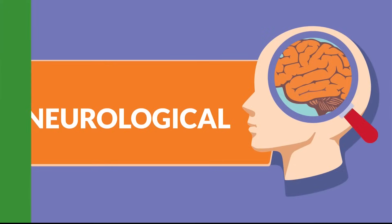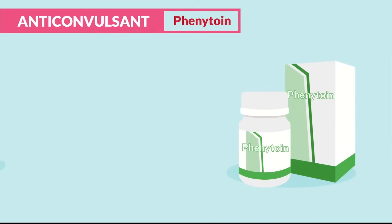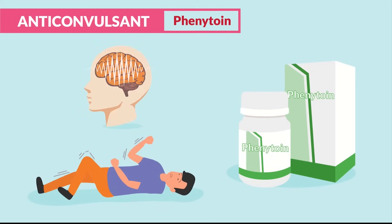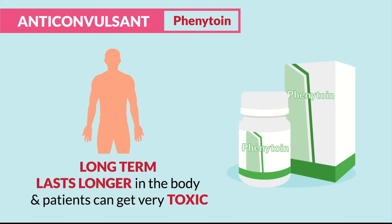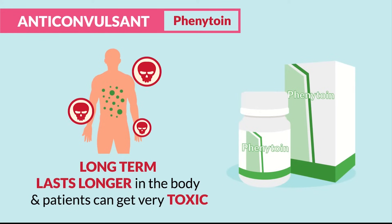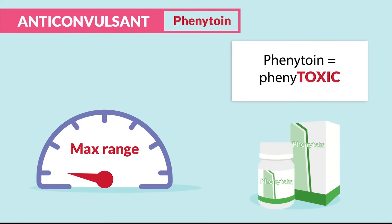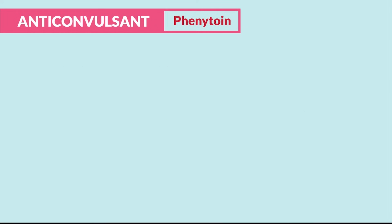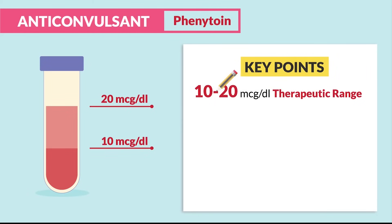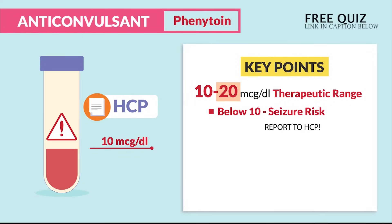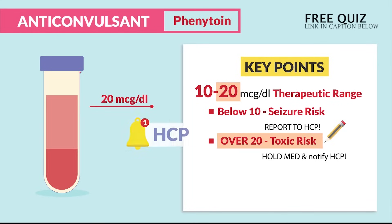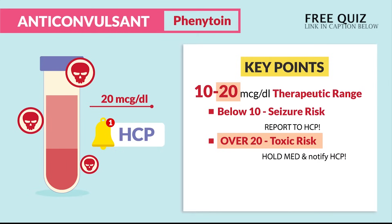Now for our neurological drugs. First up is our anticonvulsant phenytoin, given for long-term protection against seizures, like with patients with epilepsy and other long-term chronic seizure disorders. The key word here is long-term, so it lasts longer in the body and patients can get very toxic. The memory trick is we call phenytoin 'phenytoxic.' Like most toxic drugs, the max range is 20 — that's the number to know for the NCLEX. The therapeutic range is 10 to 20. Below 10, we report to the HCP since there's a huge seizure risk, and over 20 we hold and notify the HCP because of the huge toxicity risk.